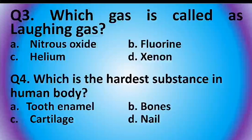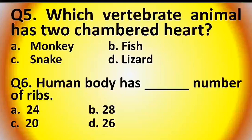Question 4: Which is the hardest substance in the human body? Options are: tooth enamel, bones, cartilage, or nail. The answer is option A: tooth enamel.